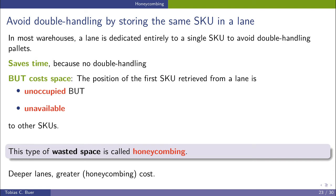And this type of wasted space is called honeycombbing. And the deeper the lanes, the greater the honeycombbing costs are.